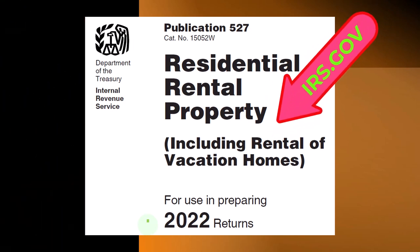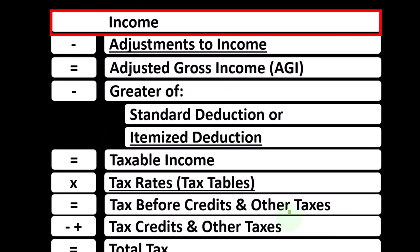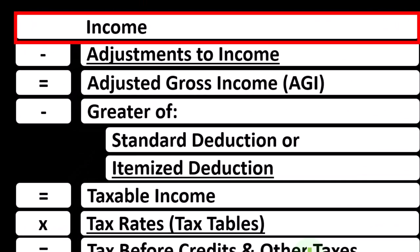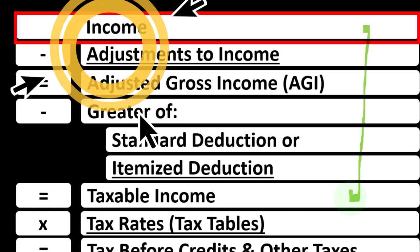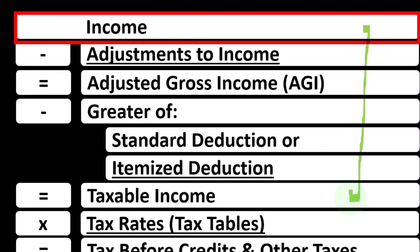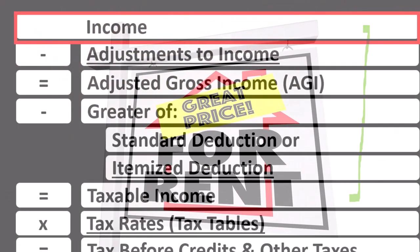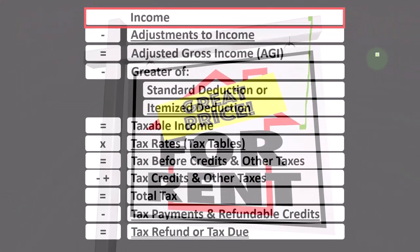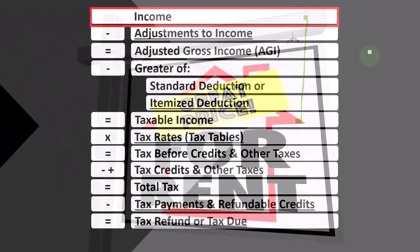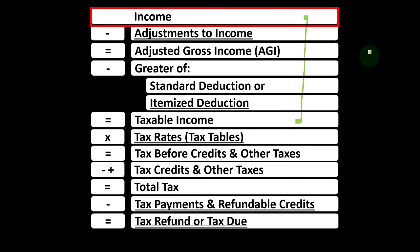Looking at the income tax formula, we're focused on line 1, income. The first half of the income tax formula is in essence an income statement, just an outline — a scaffolding — with other forms and schedules flowing into each line item. One of those is the Schedule E for rental property, which is an income statement with rental income minus rental expenses. The net rental income flows into line 1 income of our income tax formula.